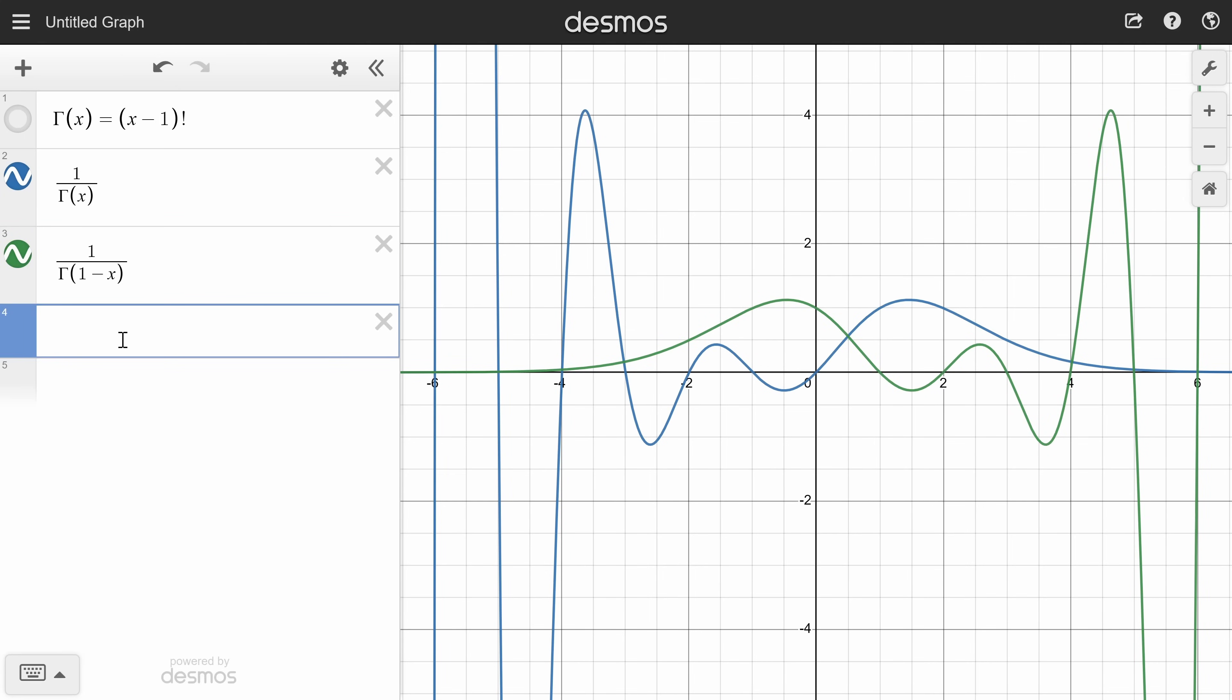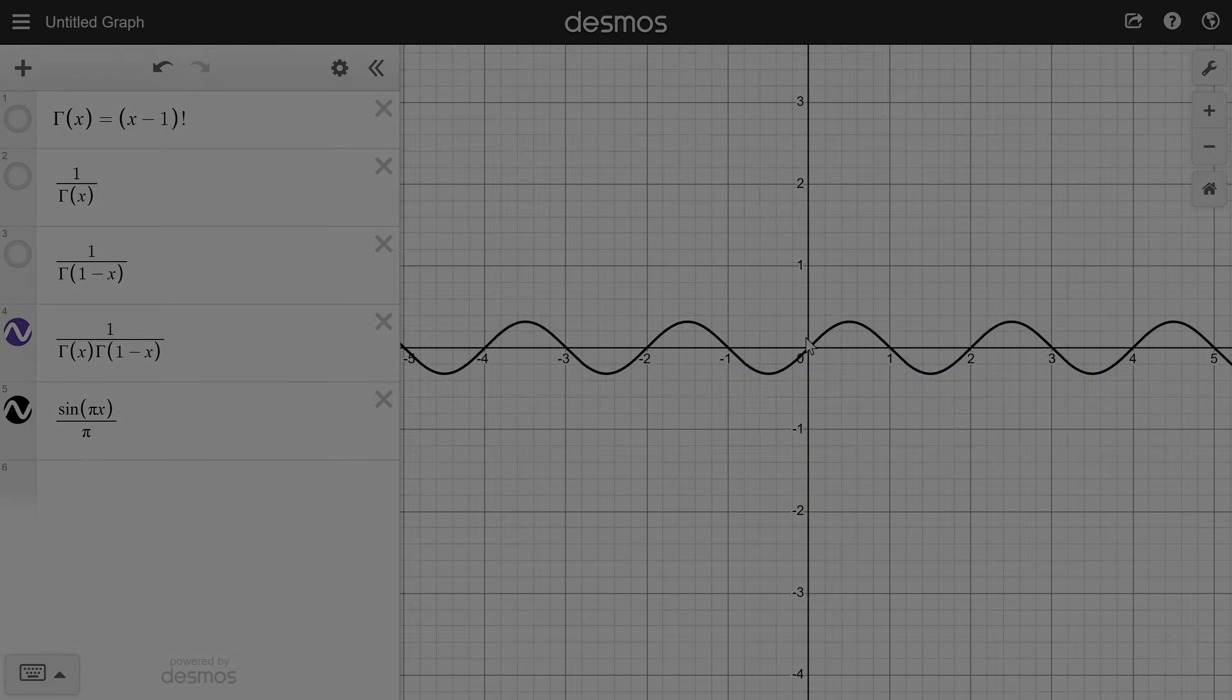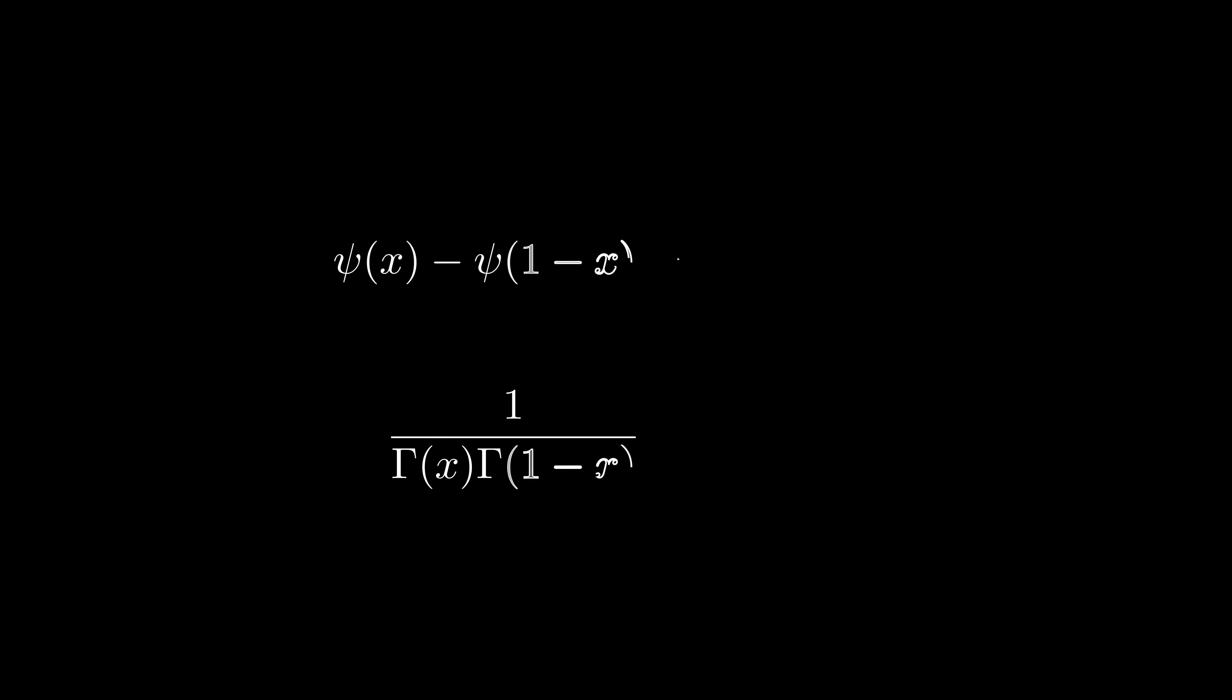The magic happens when I multiply these two versions together. It results in a perfect sine wave. And it doesn't just look a bit like a sine wave, it really is precisely equal to sine of pi x divided by pi. So what's going on here? Why does trig seem to randomly emerge when we combine these functions with themselves in these ways?